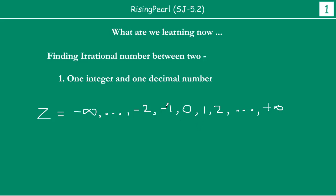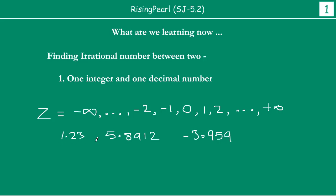Now what about decimal numbers? Decimal numbers are basically represented as, say, 1.23 or 5.8912 or minus 3.959, etc., so on and so forth. So these are all examples of decimal numbers. We have an integral part and then we have the decimal part. These are some examples of decimal numbers.